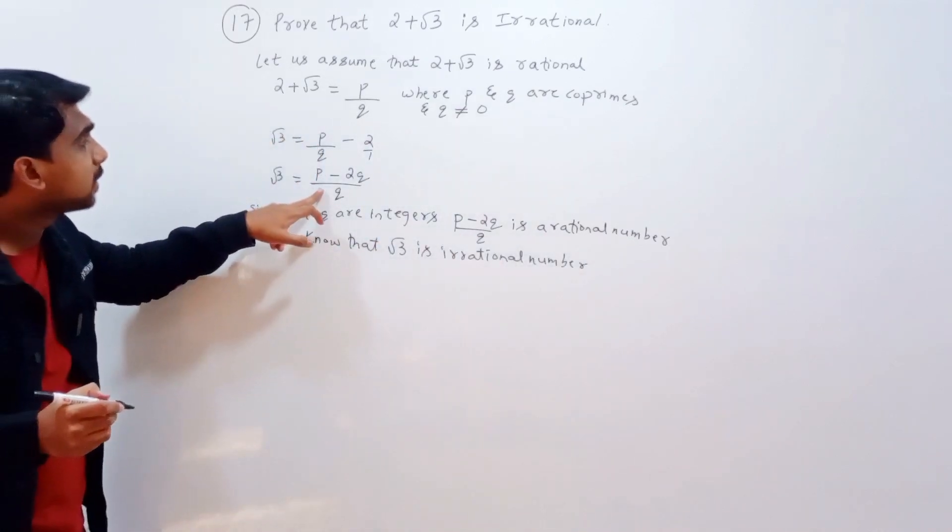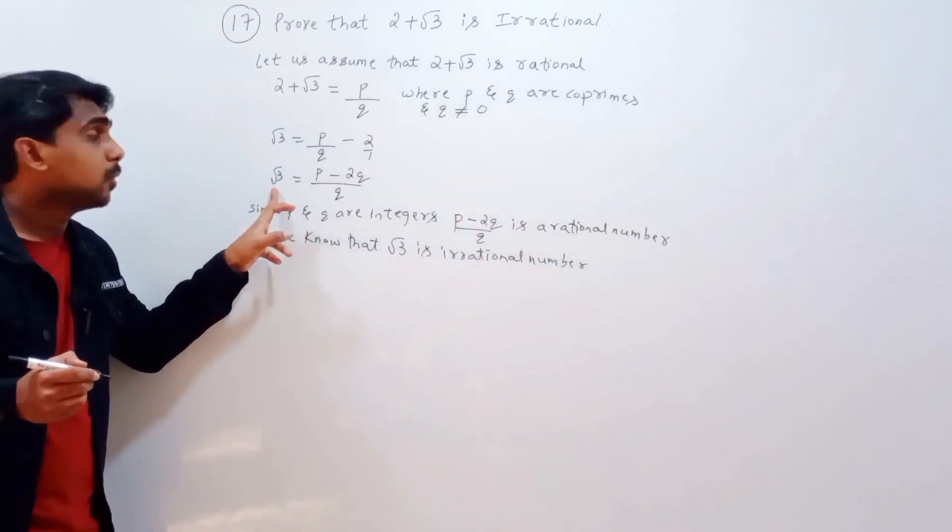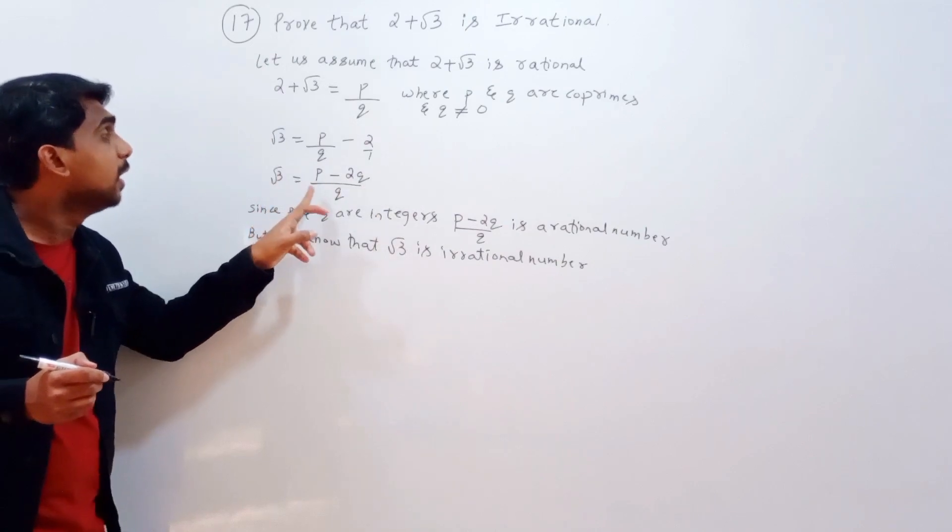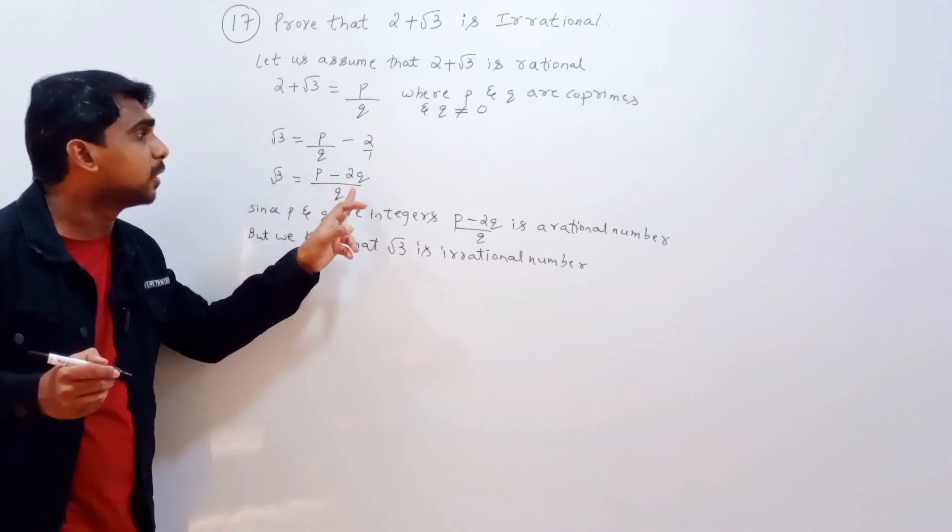So the RHS is a rational number, but the LHS is irrational. This is not practically possible.